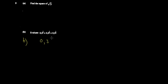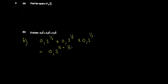For part b, we have 0.3 to the power one third, times 0.3 to the power one third, times 0.3 to the power one third. The base is the same — 0.3 — so you keep that base and add the powers when multiplying: one third plus one third plus one third equals three thirds, which is one. So you get 0.3 to the power one, which is simply equal to 0.3. Pretty straightforward.